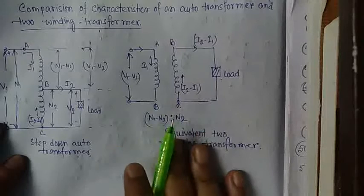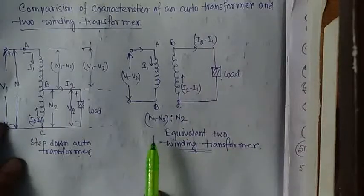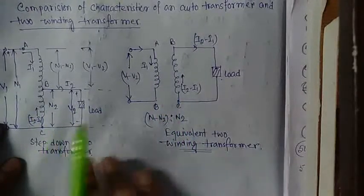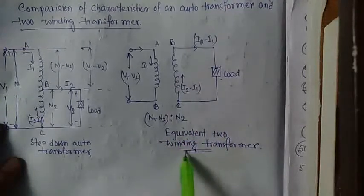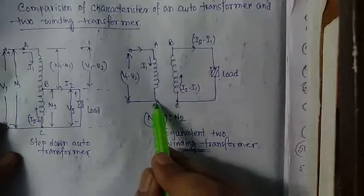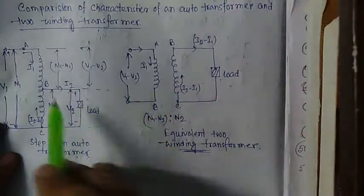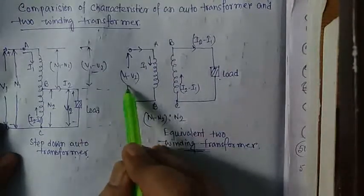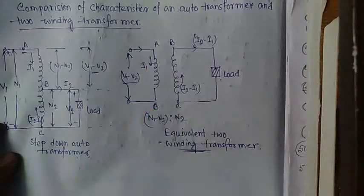Now it can be drawn as an equivalent two winding transformer. This step down transformer is drawn as an equivalent two winding transformer. Here winding AB is taken as the primary and winding BC is taken as the secondary. So across AB the voltage is V1 minus V2, and the current flowing across AB is I1.